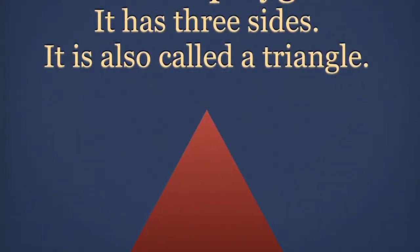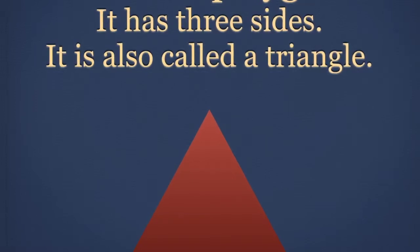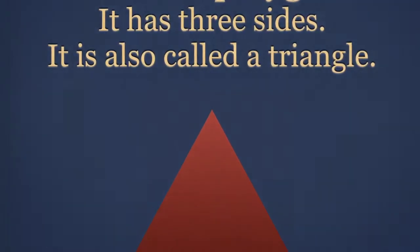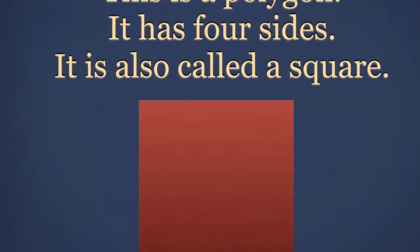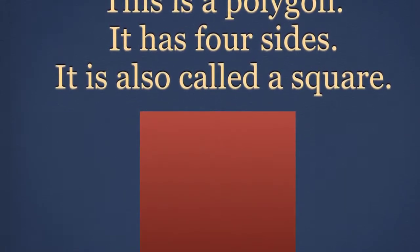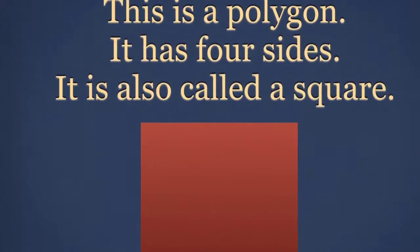Is this a polygon? Yes, it has three sides. It is also called a triangle. And this is a polygon. It has four sides. We call it a square.